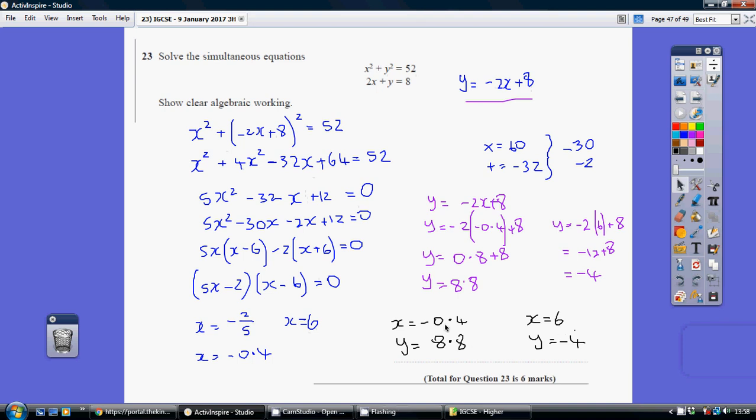I then take those x values and substitute them back into an equation at the beginning. It's easiest just to substitute into this rearranged linear formula. So my y values are minus 2 lots of the x values and adding 8. I've done those two calculations here in purple, giving me the y values of 8.8 and minus 4 respectively.